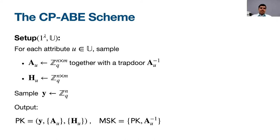I will now give an informal description of our CP-ABE, avoiding technical details not needed for understanding the functionality. The setup algorithm takes as input the security parameter and an attribute universe U. For all attributes U in the universe, it generates a matrix A_U over Z_Q of dimension N by M along with its trapdoor via the trapdoor sampling algorithm, and also samples another matrix H_U of dimension N by M, and additionally samples a vector Y of dimension N over Z_Q. The master public key consists of all matrices A_U and H_U for all attributes, along with vector Y. The master secret key consists of the master public key and trapdoors for all A_U matrices.